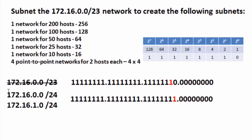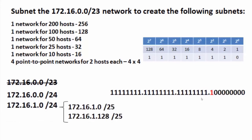I keep the first subnet (172.16.0.0/24) and subdivide the second one. I take 172.16.1.0/24 and change it to /25. This creates 172.16.1.0/25 and a second subnet at 172.16.1.128/25. Both subnets have a magic number of 128, meaning networks go up by 128. I've taken the 256-host network and subdivided it into two networks of 128 hosts each, satisfying the second requirement.